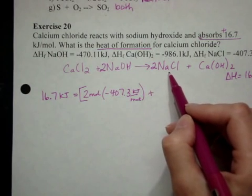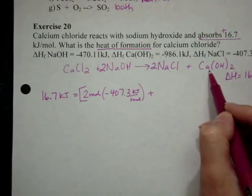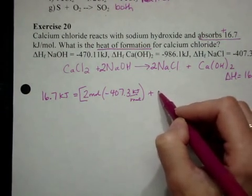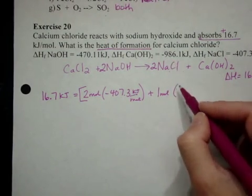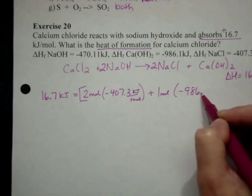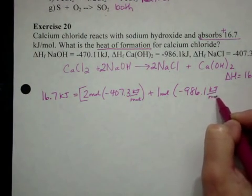Oh wait, sorry, I'm on the wrong side. NaCl plus calcium hydroxide, excuse me. So we just have one mole of calcium hydroxide and its enthalpy of formation is negative 986.1 kilojoules per mole.